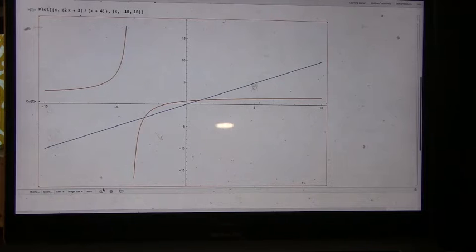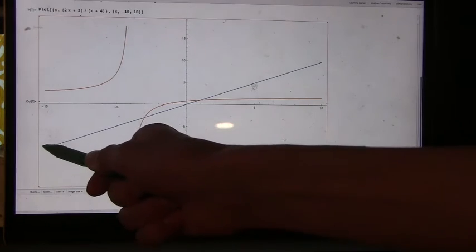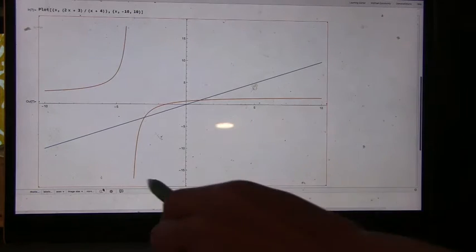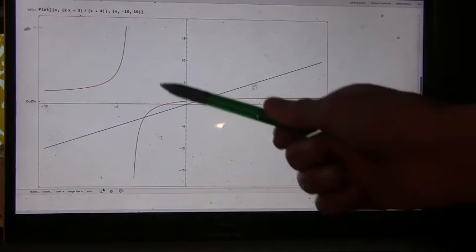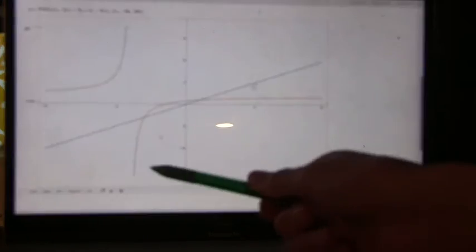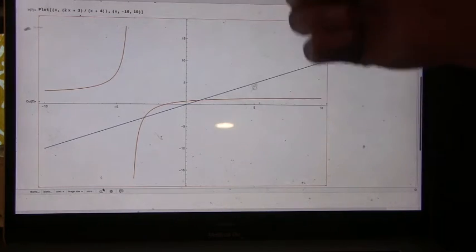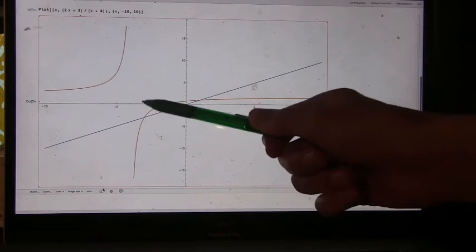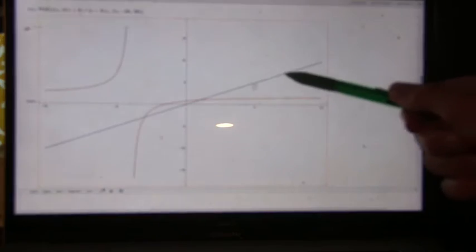We see that it starts below at this end, and then at negative 4, where one side is going to positive infinity and the other is coming from negative infinity, it switches over to this part.